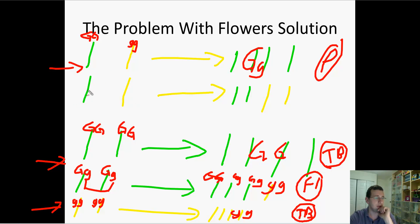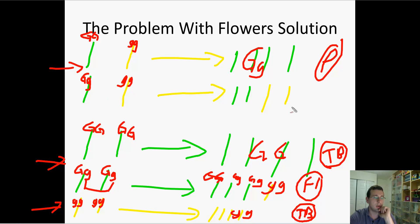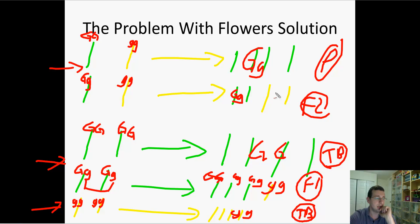But in another cross, he's doing something different — big G, little g versus little g, little g. You should recognize this as a test cross, where the children will have the same 1:1 ratio. Two will be big G, little g and two will be little g, little g. Now you understand why you're getting those two different results from crosses that seemed identical.